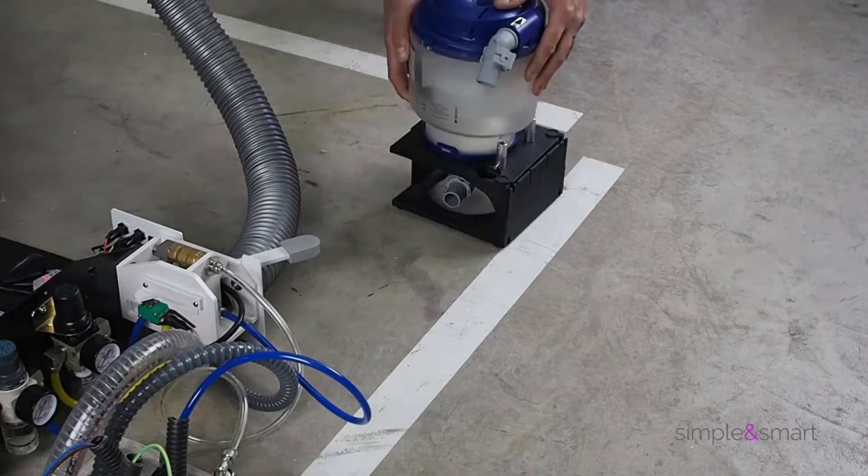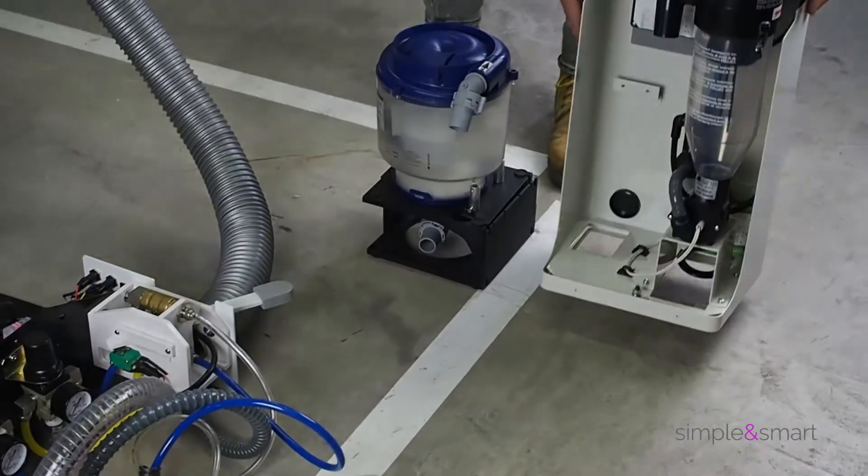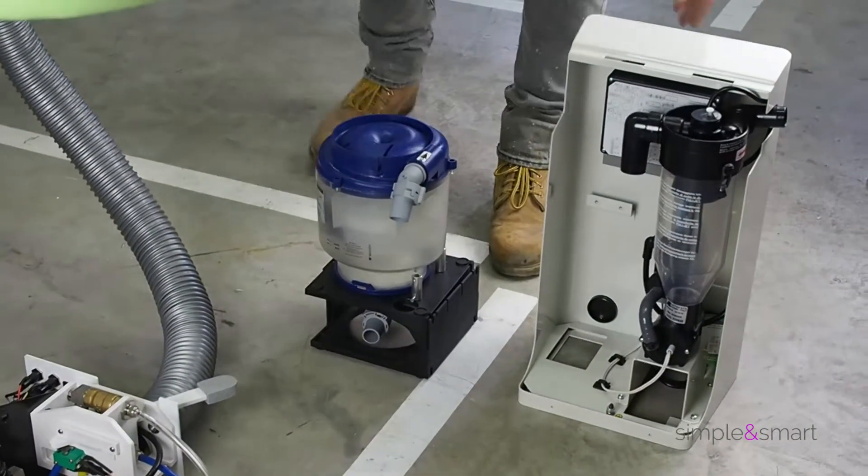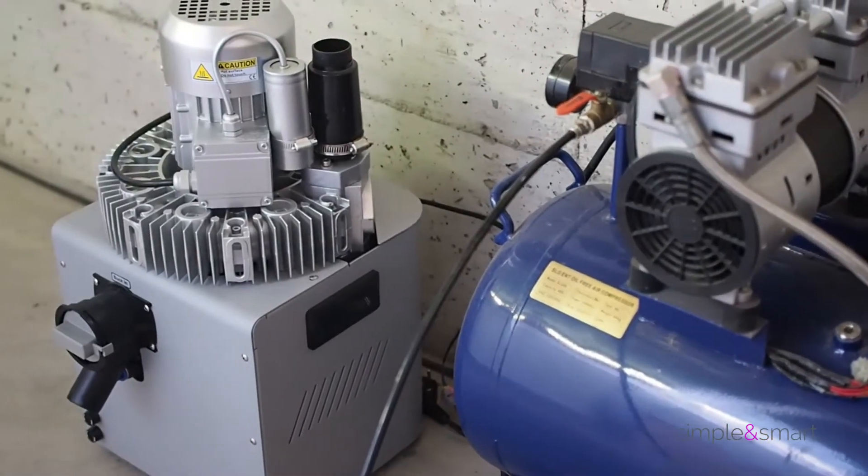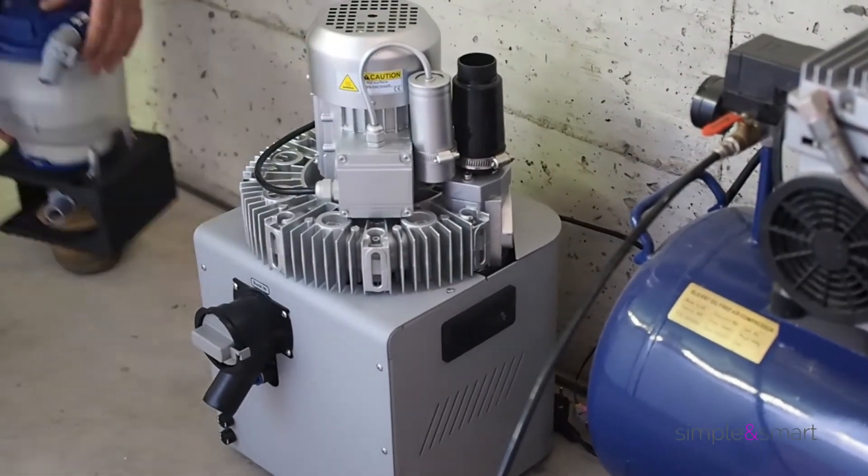In case you need an amalgam separator or an air separator for a dry suction system, we suggest to keep these next to the unit or even better in the machinery room. In this way, you have less in the operating room and you will simplify the cleaning process.